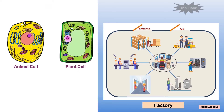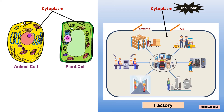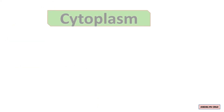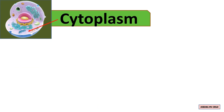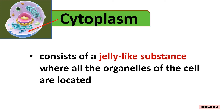The factory floor represents cytoplasm. It has all the workers, machines, and equipment on it. Cytoplasm consists of a jelly-like substance where all the organelles of the cell are located.